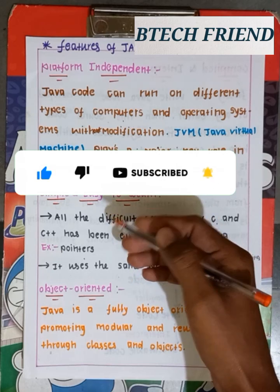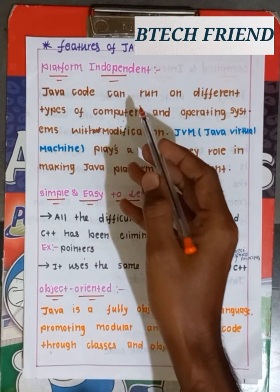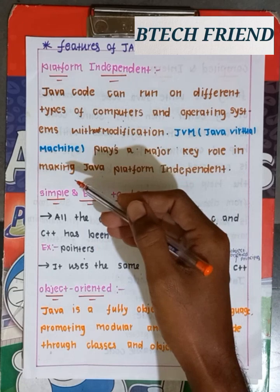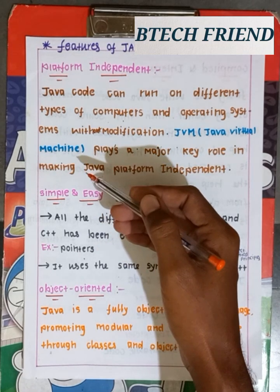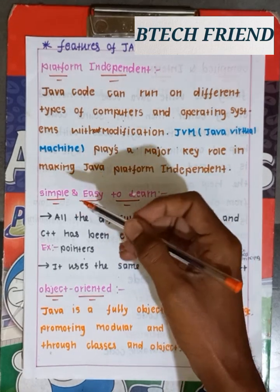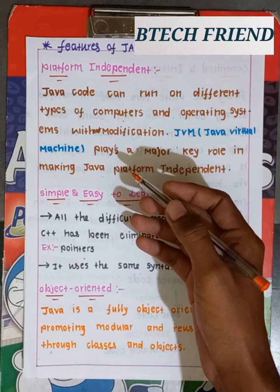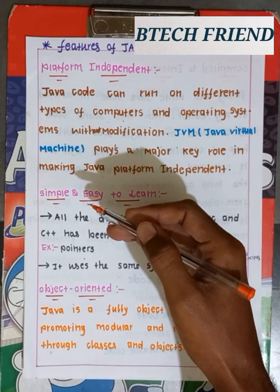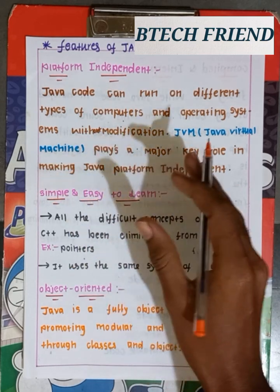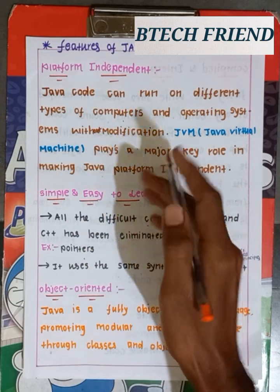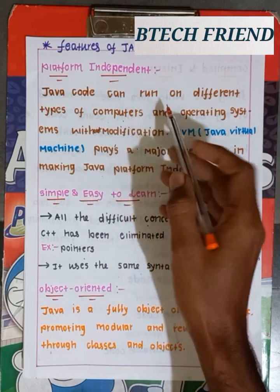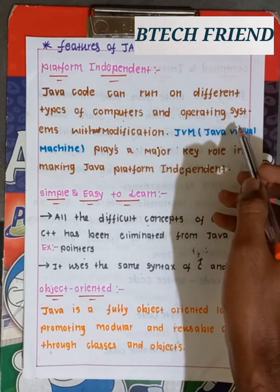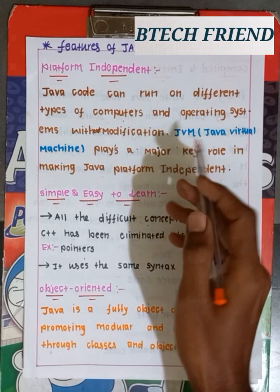The first feature of Java is that it is a platform independent language. Java code can run on different types of computers and operating systems without modification.